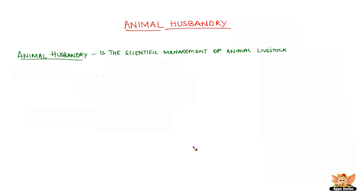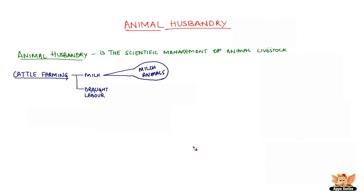Let's learn about cattle farming first. Cattle husbandry is mainly done for two purposes: for milk and for draught labor. Milk-producing female cattle are called milch animals, and those used for draught labor like tilling, irrigation, and carting are called draught animals.